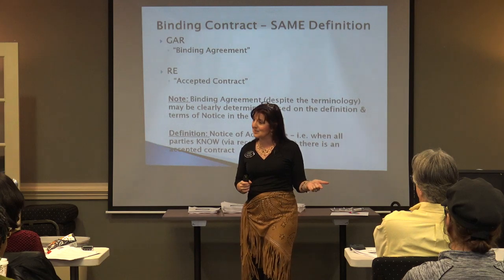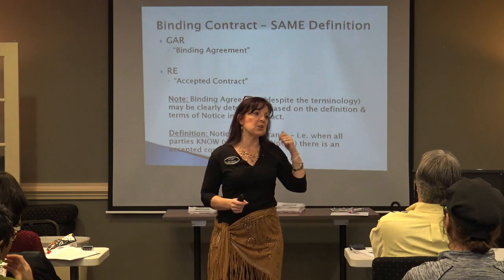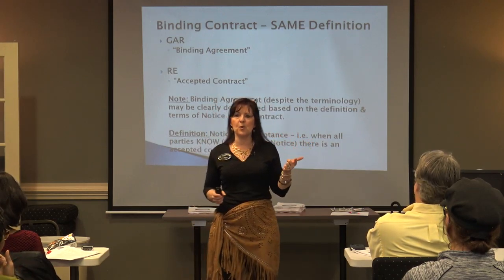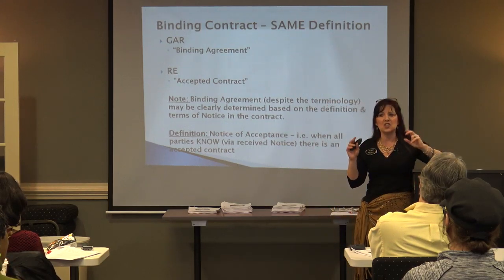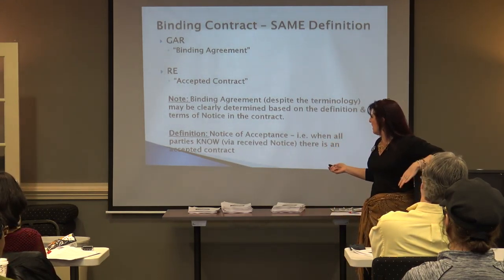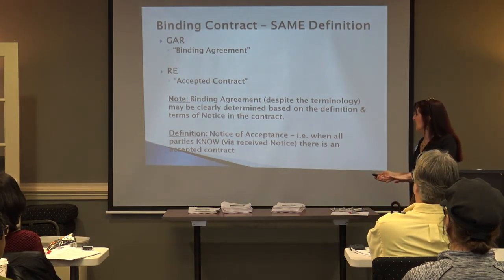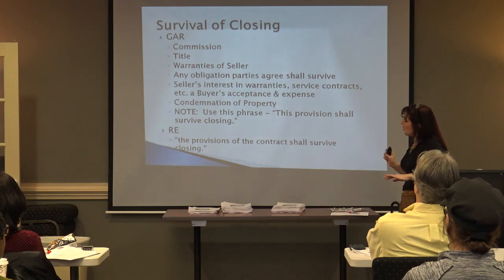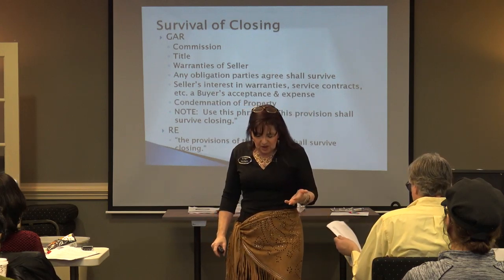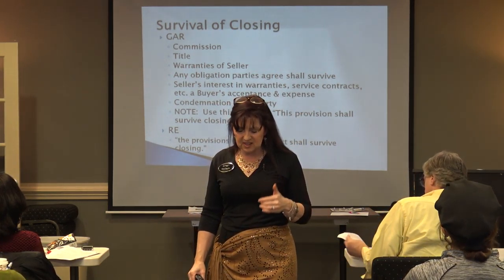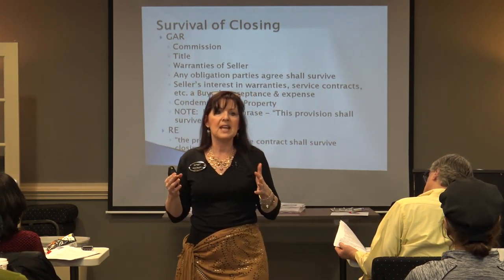If there's a discrepancy where one side thinks the binding date is Friday and the other thinks it's Saturday, you're a day off when it comes to terminating on due diligence. You need to get that squared away right then and there — while everybody's still happy — either with a form or with an amendment. Based on the definition and notice, we can determine when the binding agreement date is without dispute.